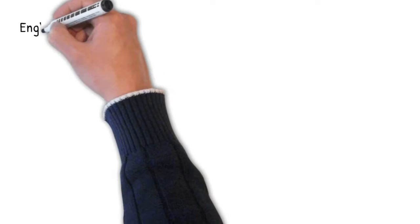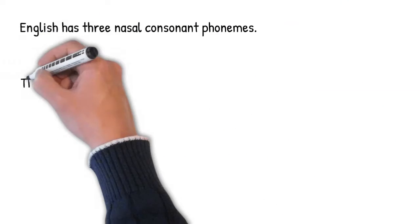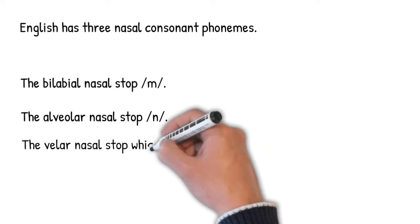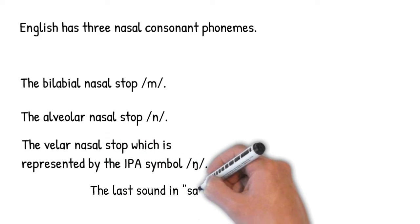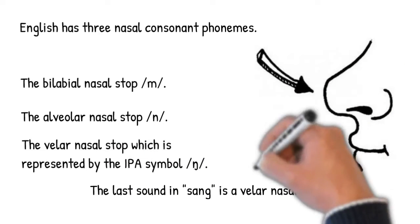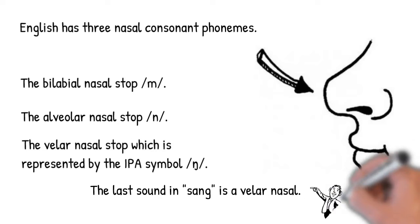English has three nasal stop phonemes. We've got a bilabial nasal M, we've got an alveolar nasal N, and we've got a velar nasal which we call engma. The IPA symbol is given here. Engma is the last sound in words like sang.